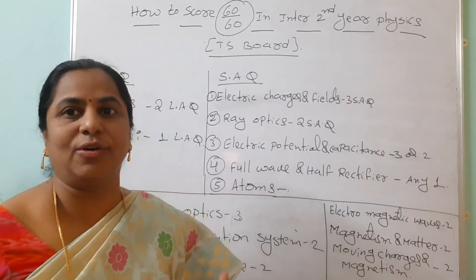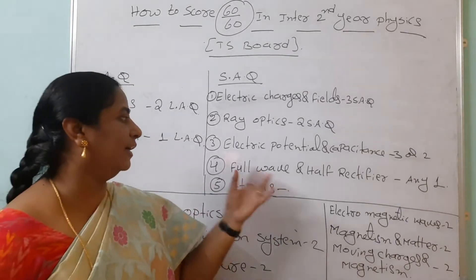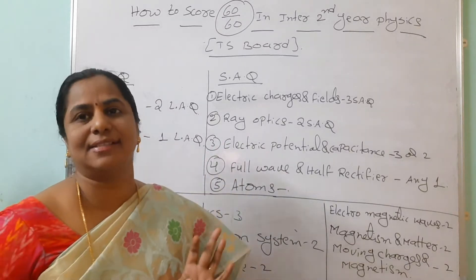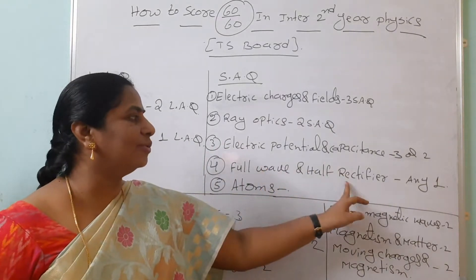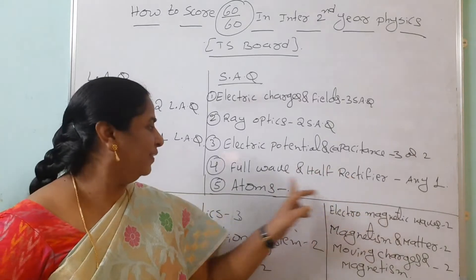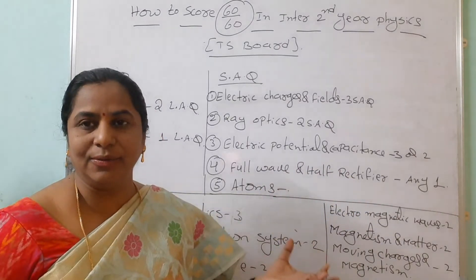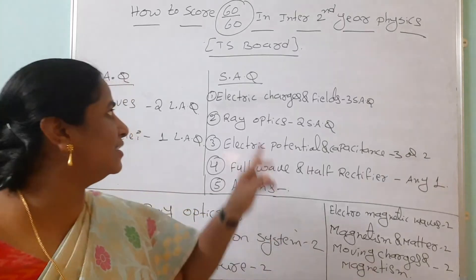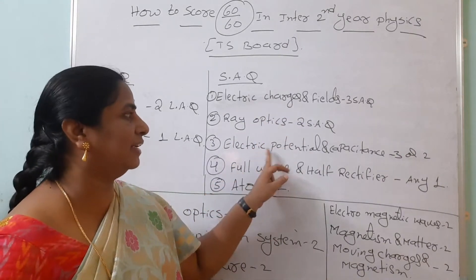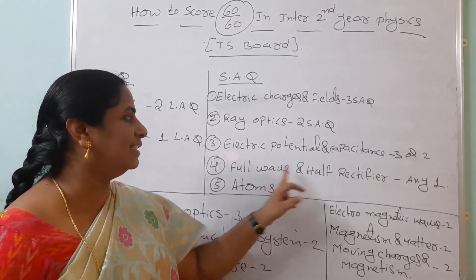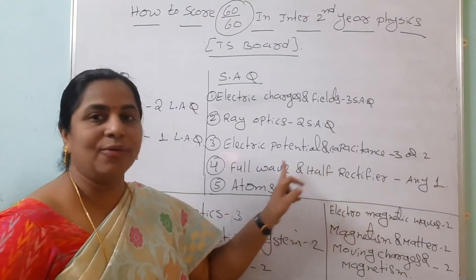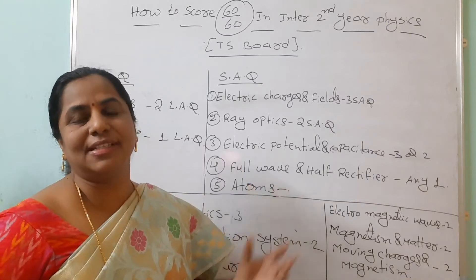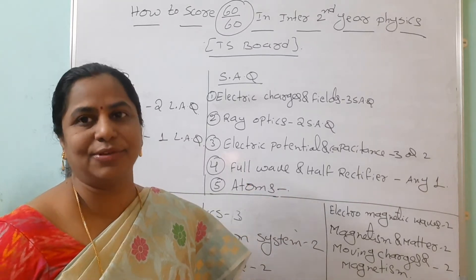For more extra, for knowledge sake, if you want, you can read full wave rectifier and half wave rectifier. Compulsory one is coming from many years onwards. If you are reading these two also, you can write one. Then atoms - if you already read that, you can revise that also. Give more preference to electric charges and fields, ray optics, electric potential and capacitance. From this section, you should write six answers. Six fours are 24 marks.